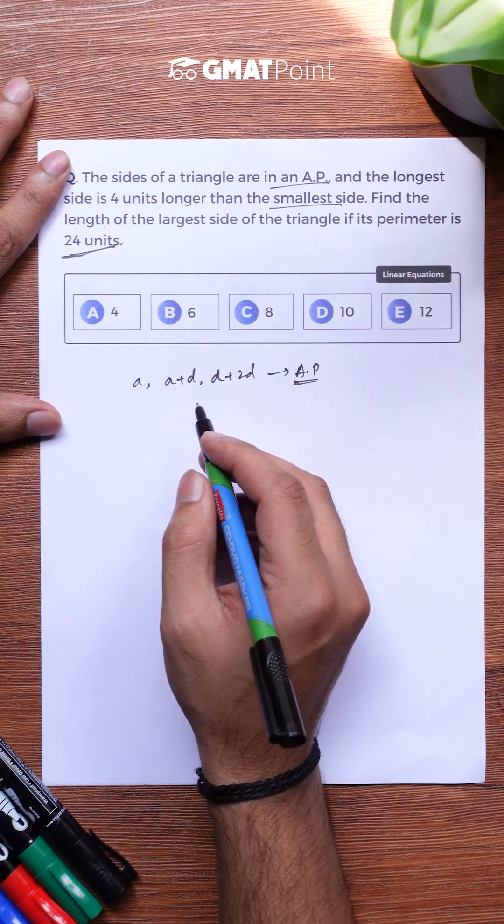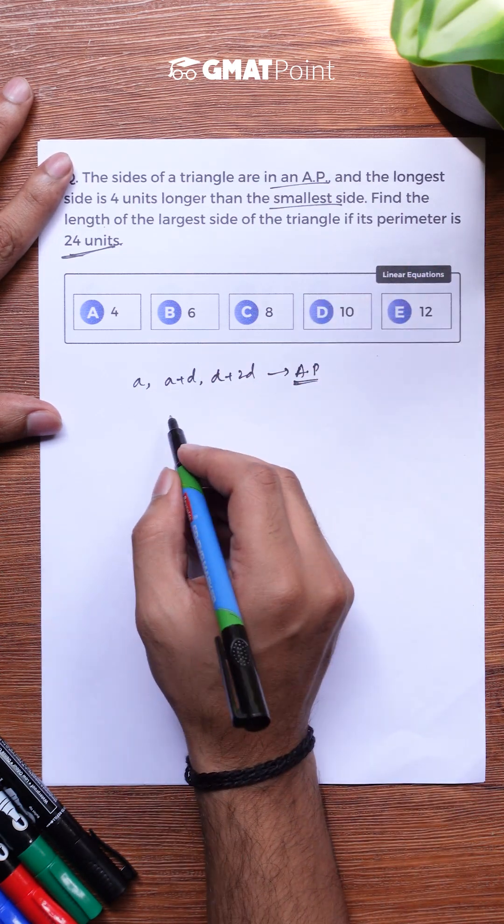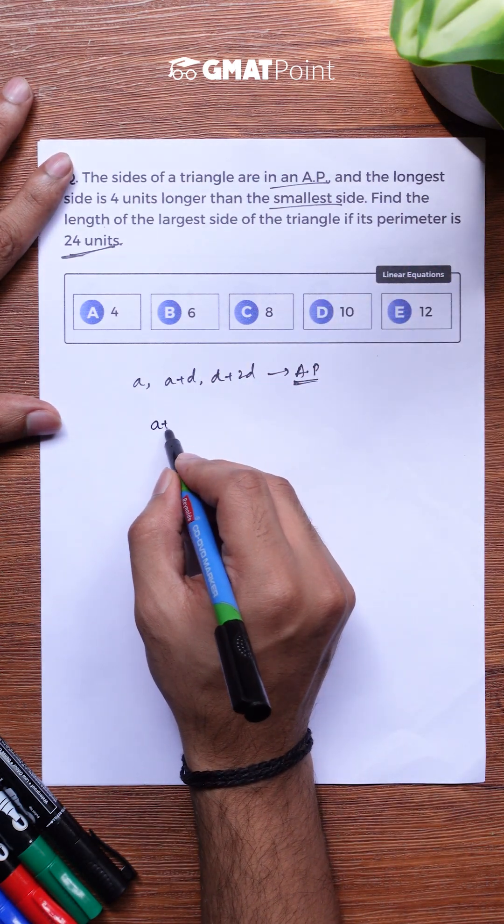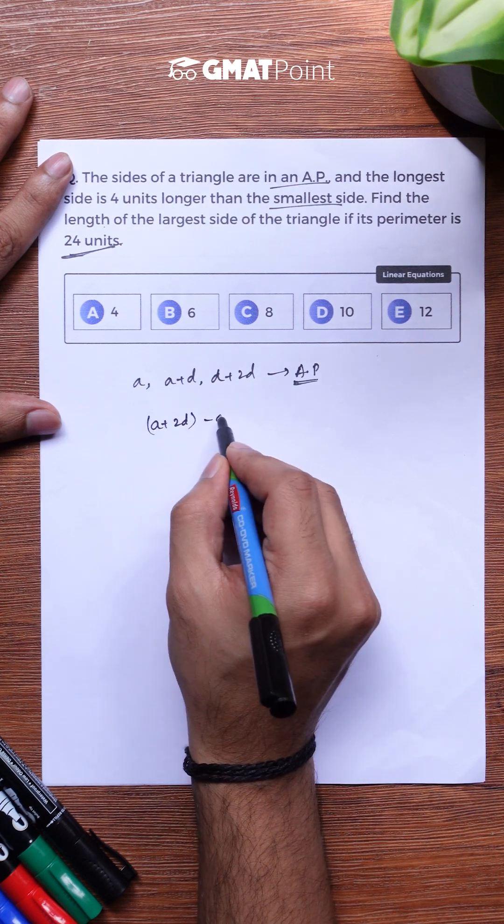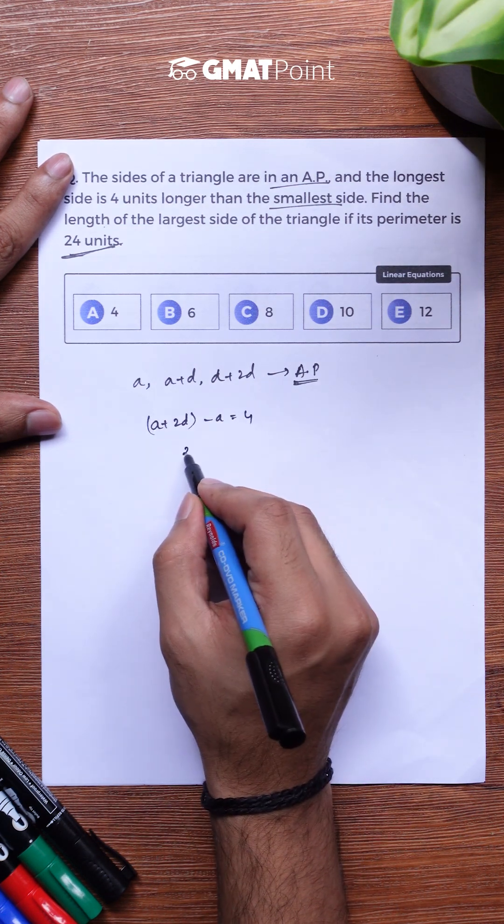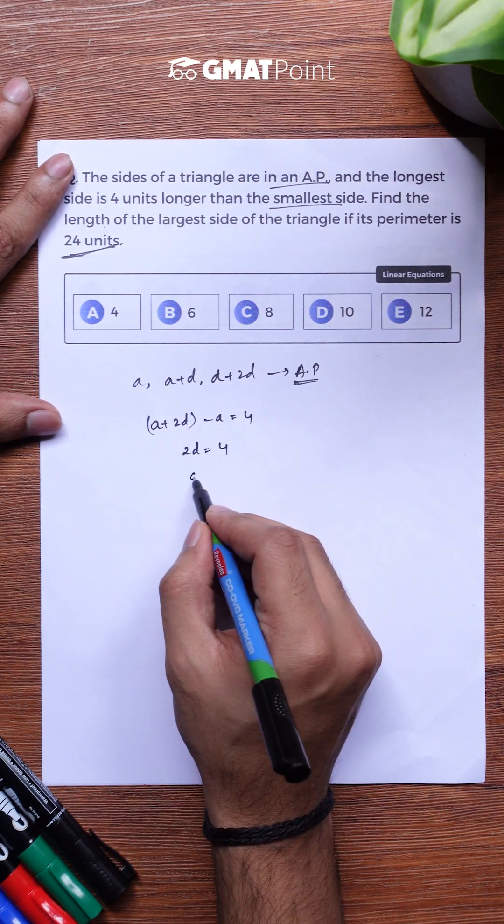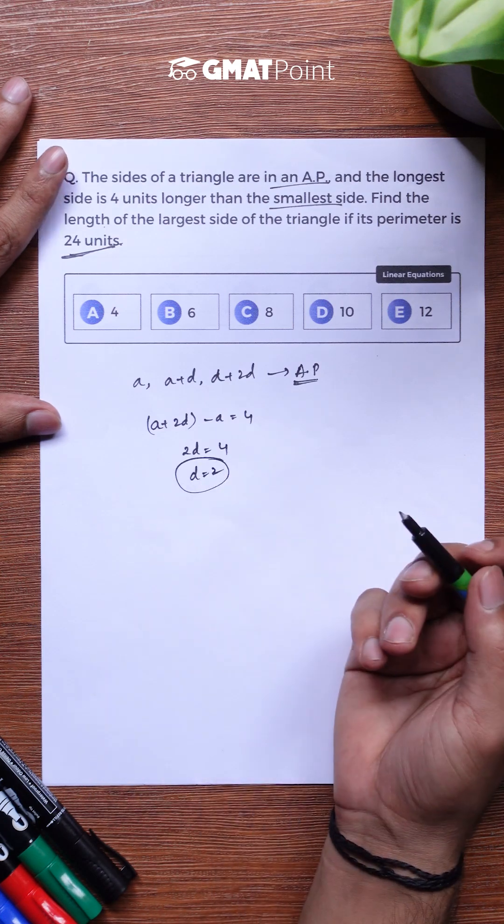Now we are told that the difference between the largest and the smallest side is 4. So the value of A plus 2D minus A is equal to 4 and we get the value of 2D to be 4 and we obtain the value of D to be 2.